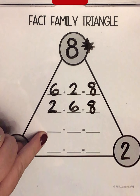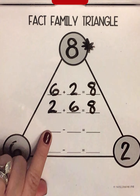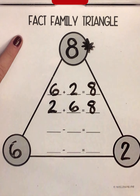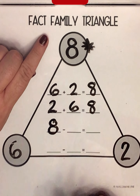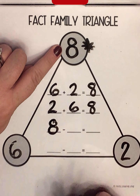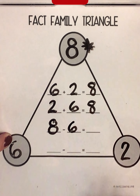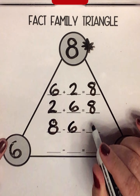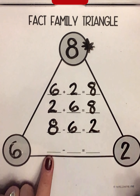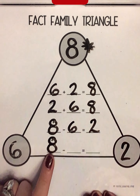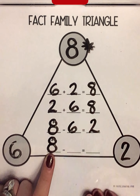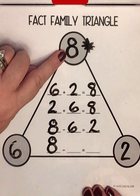Now, we're going to look at our subtraction equations. Do you remember which number goes on the front of a subtraction equation when we're doing a fact family? If you said 8, you were correct. Great job. 8 goes on the front of the subtraction equation. Now, let's do 8 minus 6. If I'm doing 8 minus 6, what number is left? It's 2. Now, let's write our last subtraction equation. Again, I'm starting with 8. Why am I starting with 8? Because 8 is the largest number of this fact family.